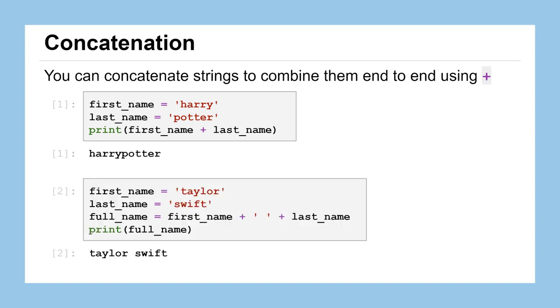Here in our second example, we'll do the same thing with our first_name and last_name being Taylor and Swift respectively. But we'll create a third variable called full_name where we concatenate first_name, a string that contains a single space, and then the variable last_name. Then we'll print that new variable full_name and we'll see we get the first string and the last string concatenated together with a space in between, making them a little bit more readable.